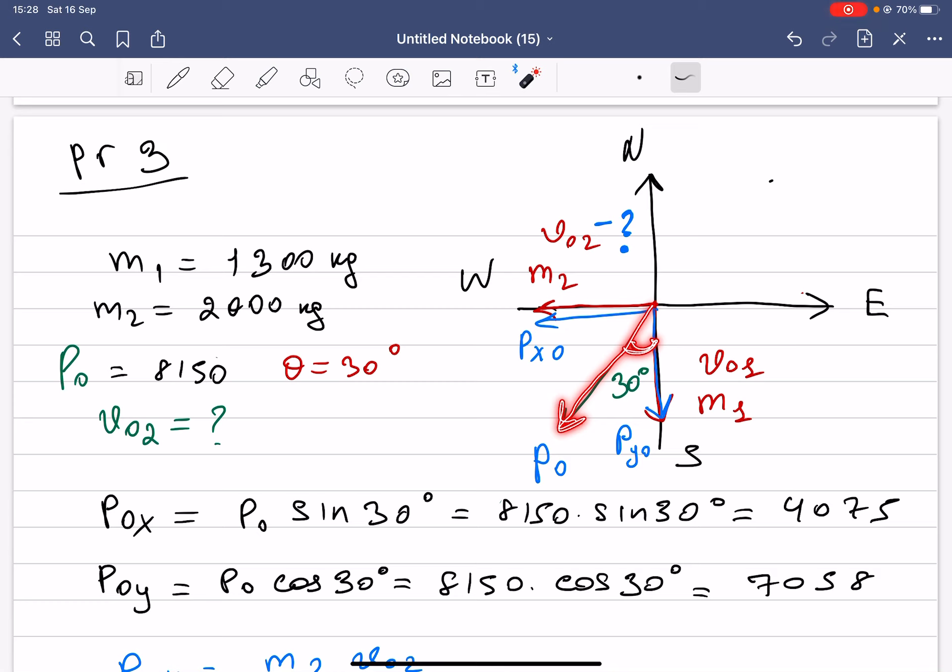If the momentum of both cars is 8150, then what will be the initial velocity of the second car which is moving to the west?